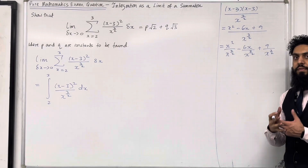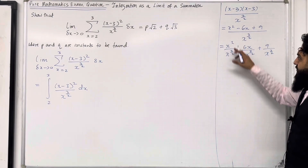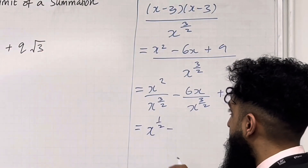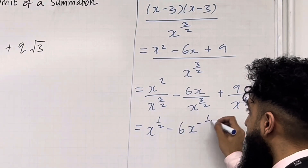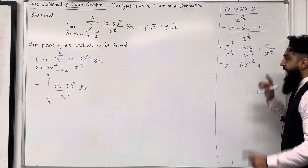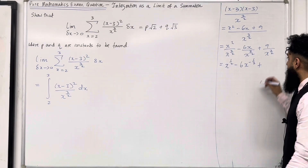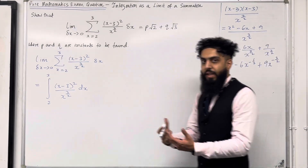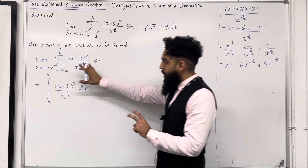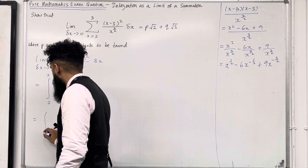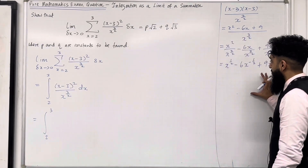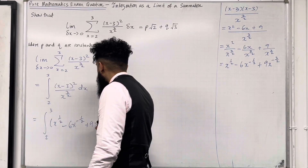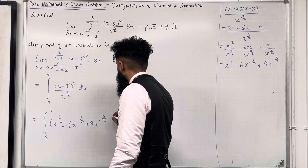Now I can divide each term by x to the power 3/2. For the first two terms I use laws of indices — when dividing, I subtract the powers. So the first term becomes x to the power 1/2, the second term becomes minus 6x to the power minus 1/2. For the third term, I bring x to the power 3/2 to the top, negating the power, giving 9x to the power minus 3/2. So the integral from 2 to 3 of x to the power 1/2 minus 6x to the power minus 1/2 plus 9x to the power minus 3/2 dx.